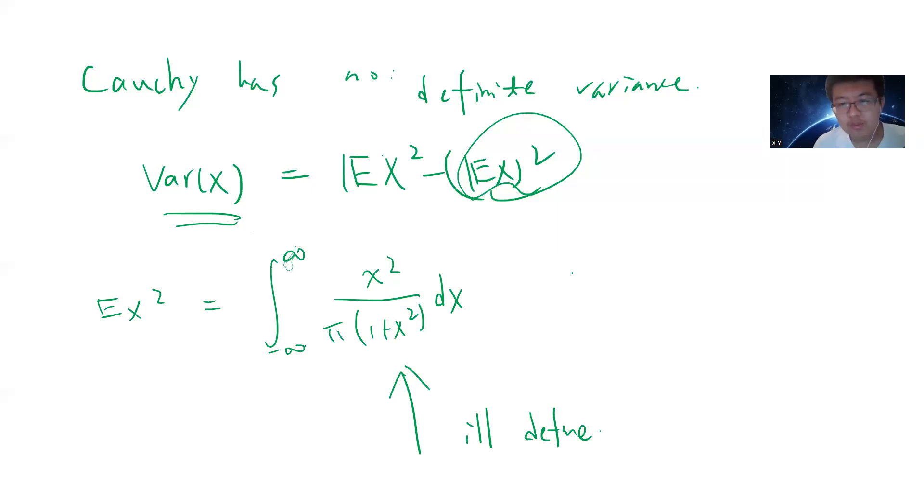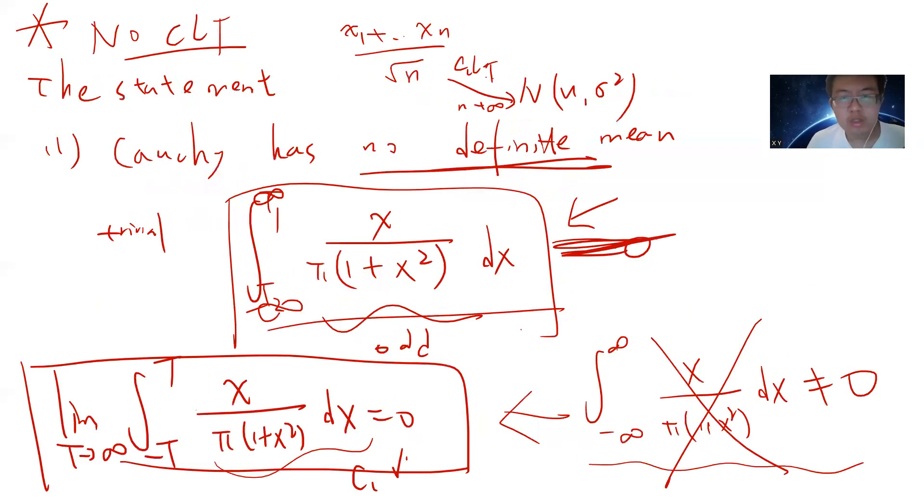The reason is very simple: if you take x to infinity, you get x² over π(1 + x²) is basically 1/π. So it's non-zero, so if you have an improper integral, if you take x to infinity, it's non-zero, that means that improper integral is ill-defined.